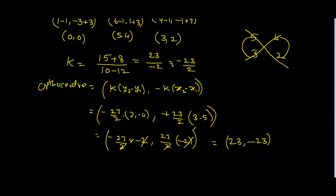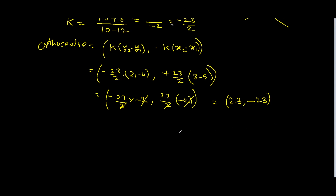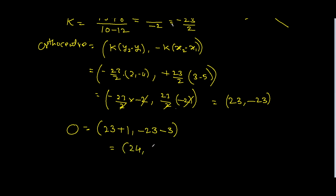Now the orthocentre is shifted back to the point (1, -3). So orthocentre O is equal to (23 + 1, -23 - 3), that is equal to (24, -26). This is the orthocentre of the given triangle.